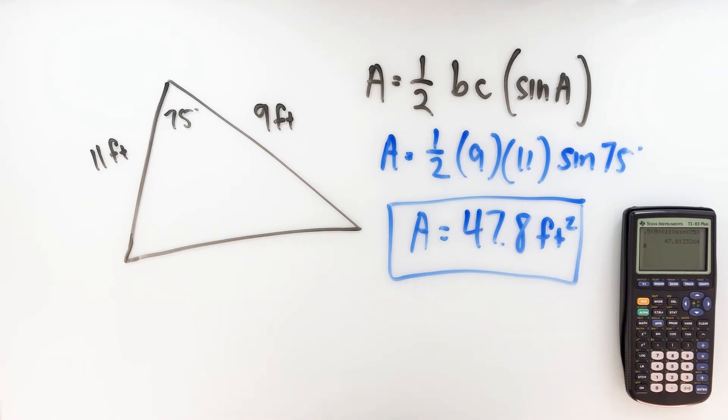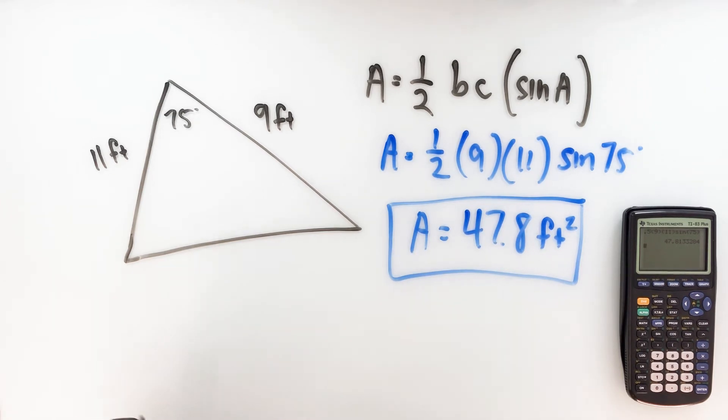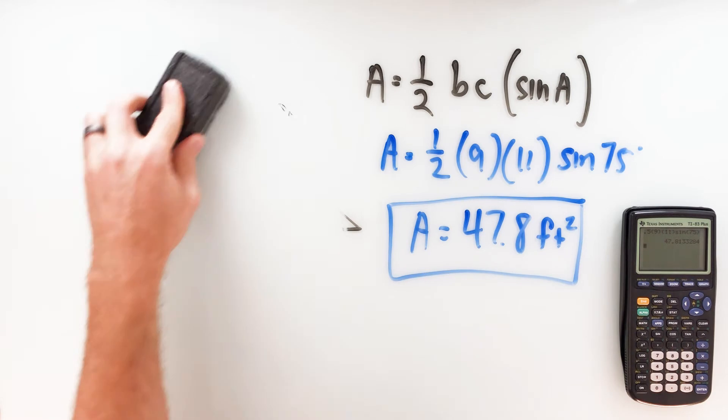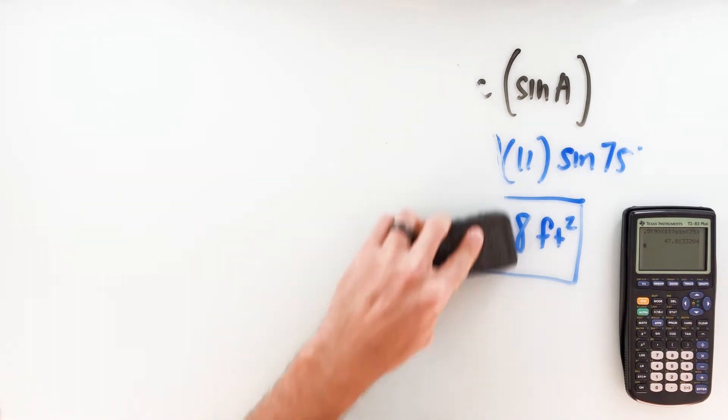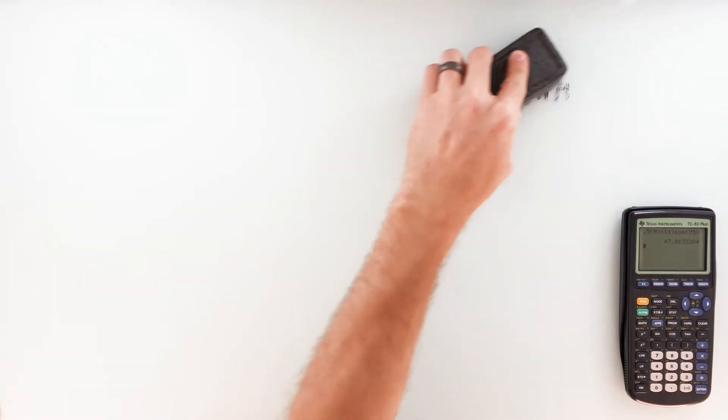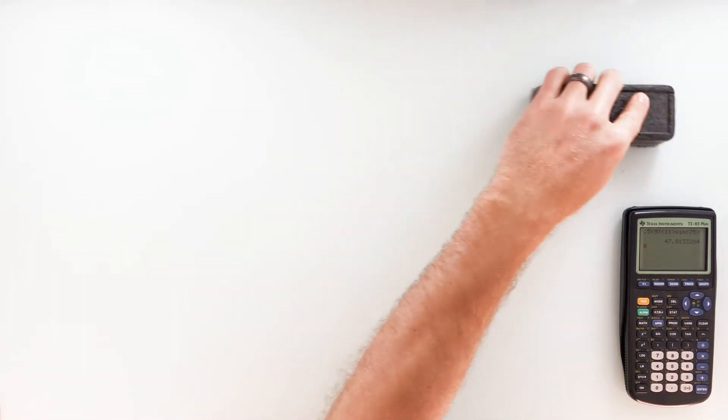By itself it's a useful formula, but where this really will help us: if you've already looked at finding areas of regular polygons, you'll remember how much of a process it can be. If you remember the formula one half AP, you kind of have to go through a process of finding an apothem and then a perimeter. It can be a little tedious.